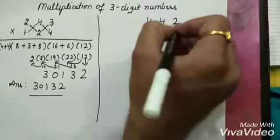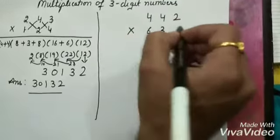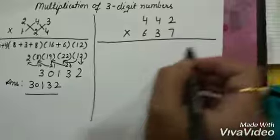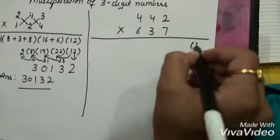442 multiply 637. Let's try to learn it. 7 times 2 is 14.